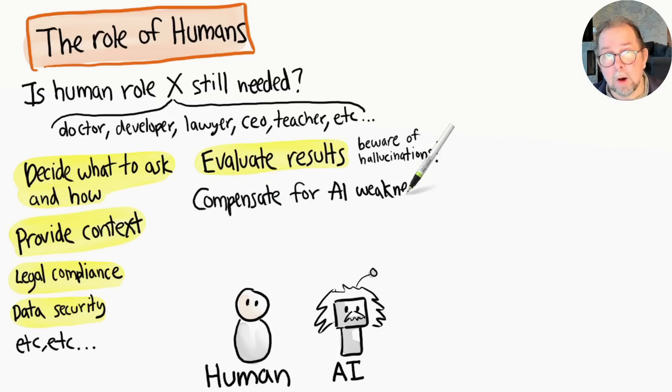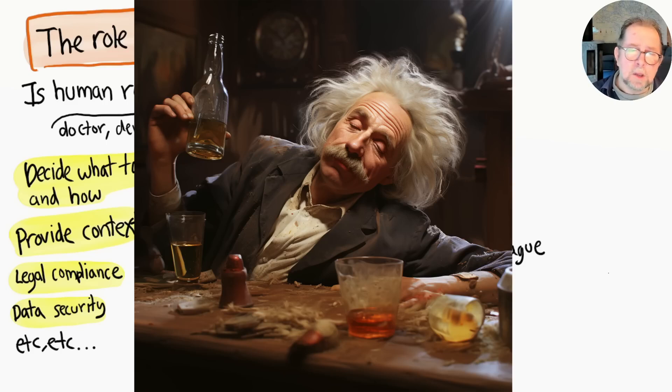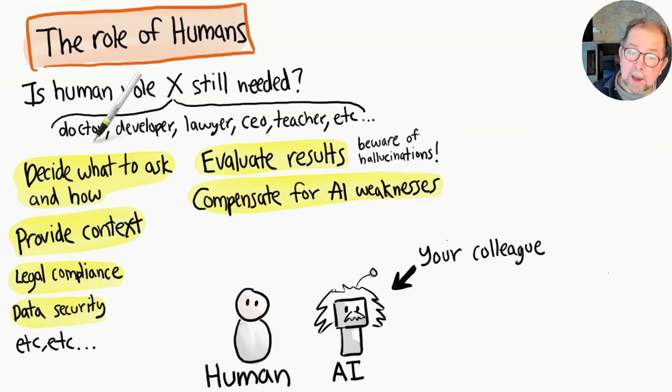A human expert is needed to make these judgment calls and compensate for the weaknesses of the AI model. So I recommend thinking of AI as your colleague - a genius, but also an oddball with some personal quirks that you need to learn to work with. You need to recognize when your genius colleague is drunk.